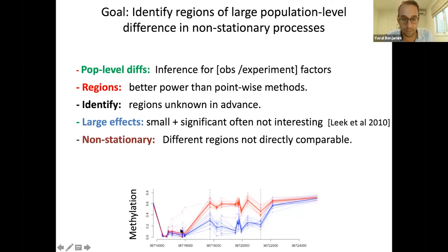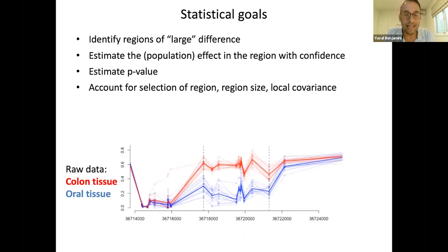Non-stationarity: the probes are not evenly spaced along the genome. Sometimes they're highly correlated, sometimes there are jumps in the correlation. So it's not very easy to compare a region from one area in the genome to a region from another area. We would look for local methods. Statistically, I want to identify the regions and estimate the population difference within this region with a confidence interval or p-value, and I need to account for the fact that I'm selecting the region.